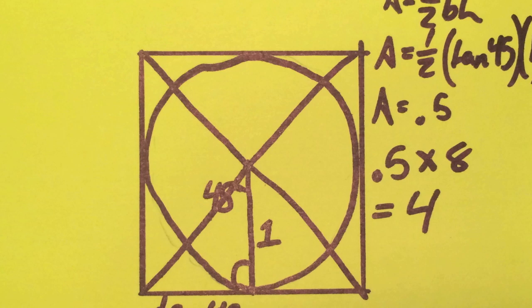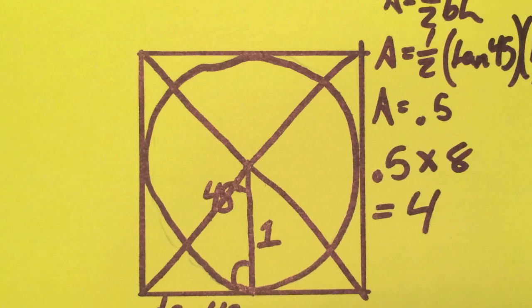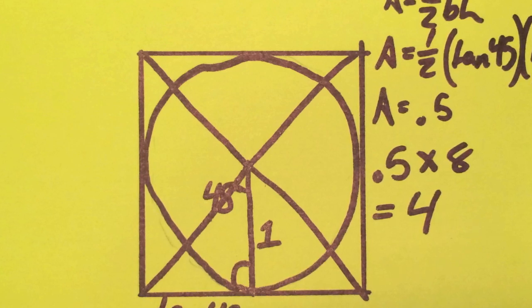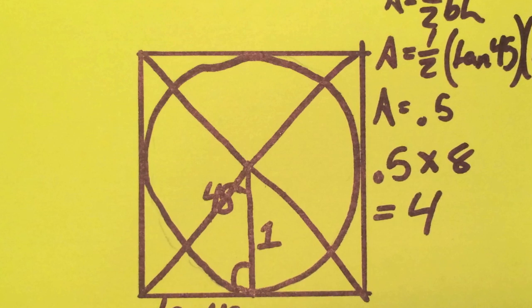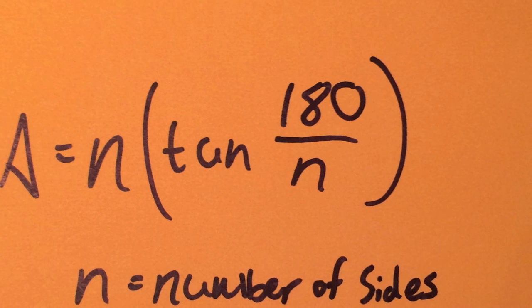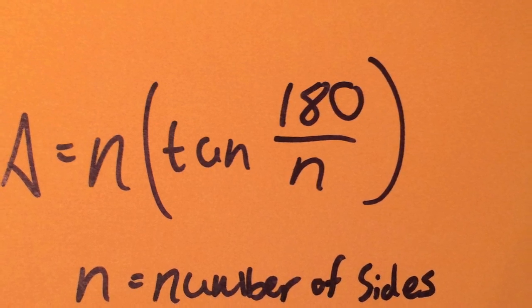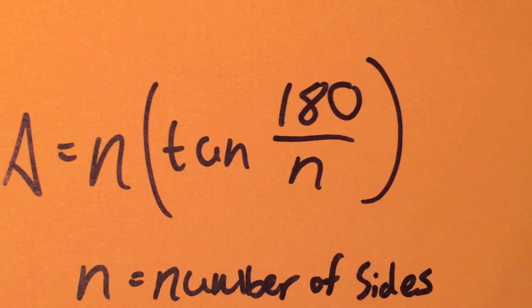Once again, you will notice this clear pattern being formed, and like before, there is a mathematical function you can use to find the area of any polygon with a circle of radius 1 inside. This formula can be expressed as such, once again, n representing the number of sides.